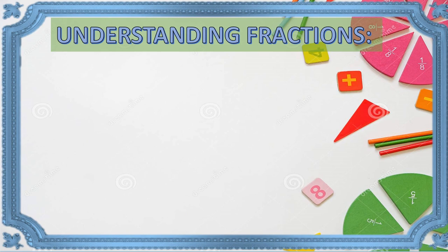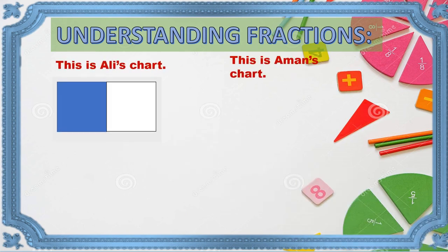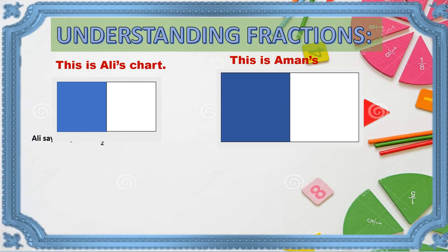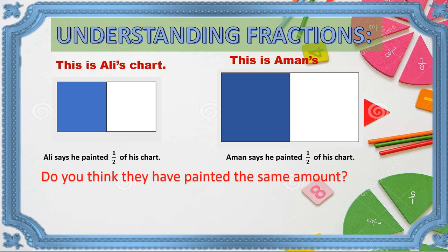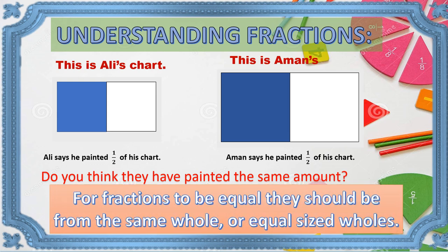Understanding fractions better. This is Ali's chart and this is Aman's chart. Ali says he painted half of his chart, and Aman says he painted half of his chart. Do they have the same amount? No — because Ali's chart is smaller than Aman's chart, so these two fractions are not equal. For fractions to be equal, they should be from the same whole or equal-sized wholes.